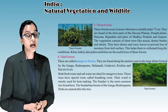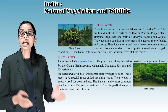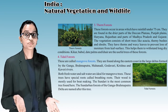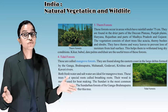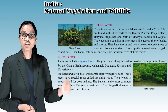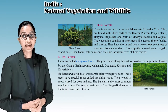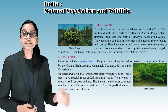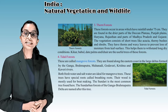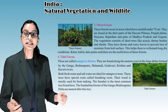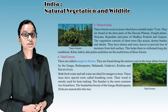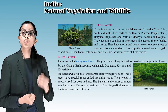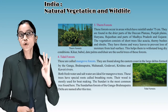The third is thorn forests. These forests occur in areas with rainfall under 75 centimeters, found in the drier parts of the Deccan Plateau, Punjab plains, Haryana, Rajasthan, and parts of Madhya Pradesh and Gujarat. The vegetation consists of short trees like acacia, thorny bushes, and shrubs with thorns and waxy leaves to prevent moisture loss. Khejri, babul, date palm, and cactus are the useful trees of these forests.